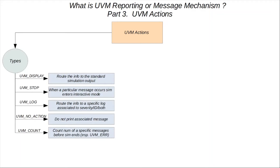UVM_COUNT is mainly used for things like UVM error counting. This action is typically used to count the occurrence of a particular message before the simulation is stopped. UVM_EXIT causes the simulation to end immediately — essentially, if a particular message with UVM_EXIT action is encountered, the simulation stops immediately.